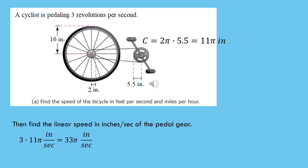Since the circumference of the pedal gear is 11 pi inches and the cyclist is rotating three revolutions per second, every second three times the circumference is being traced by points on the edge of that gear. So that gear is moving 33 pi inches per second.